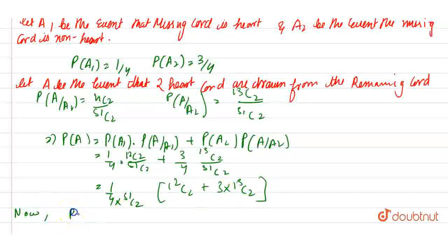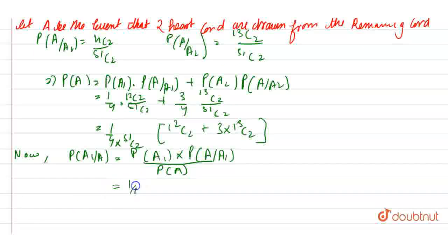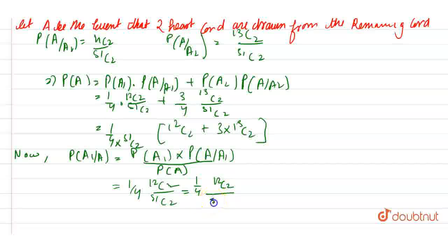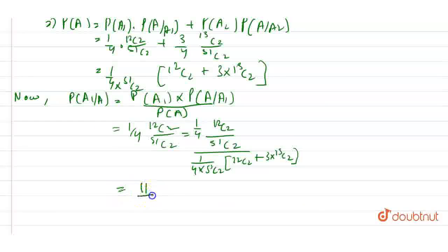Now, P(A1 given A) = P(A1) × P(A given A1) divided by P(A). It is equal to (1/4 × 12C2 / 51C2) divided by (1/(4 × 51C2)) × (12C2 + 3 × 13C2), which simplifies to 11 divided by 50.